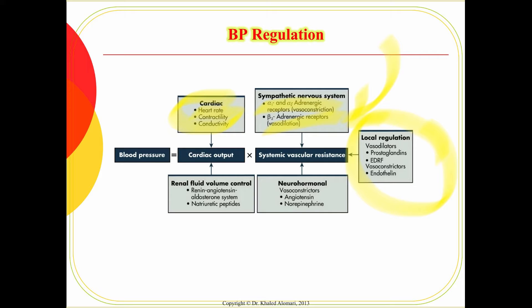Prostaglandins also can do that. The kidneys are also very important. Blood pressure could be a result of long-term kidney function problems, and kidney failure can also result from high blood pressure. We talked in pharmacology about renin, angiotensin, and the whole RAAS system. In other words, blood pressure could be high due to high cardiac output from high contractility, high fluid return, high fluid overload, or a problem within the blood vessels.